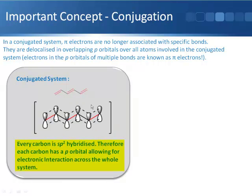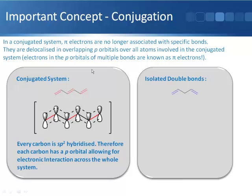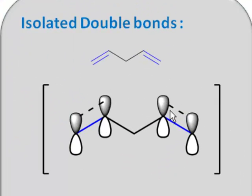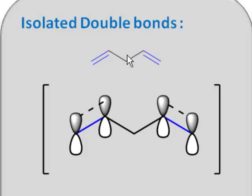Every carbon is sp2 hybridized, so each carbon has a p orbital allowing for electronic interaction across the whole system. Compare that to a pair of double bonds that aren't conjugated, which have an sp3 hybridized carbon between them. Those two orbitals can overlap in a conventional double bond on either side, but these two are too far away from each other to have sideways overlap. So you don't extend the conjugated pi system through this chain because there's an sp3 hybridized carbon atom in the way.